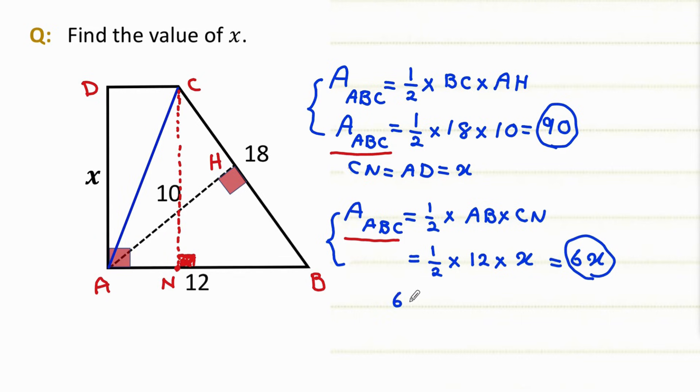So 6x is equal to 90. And if you divide both sides by 6 and cancel out 6 from left side, x becomes 90 divided by 6, which is 15.